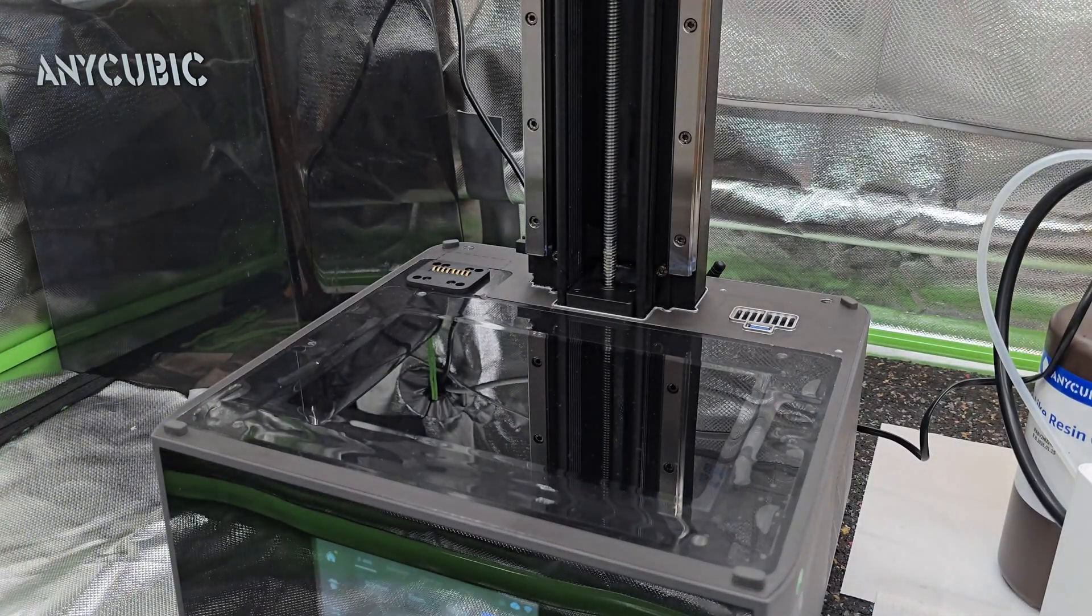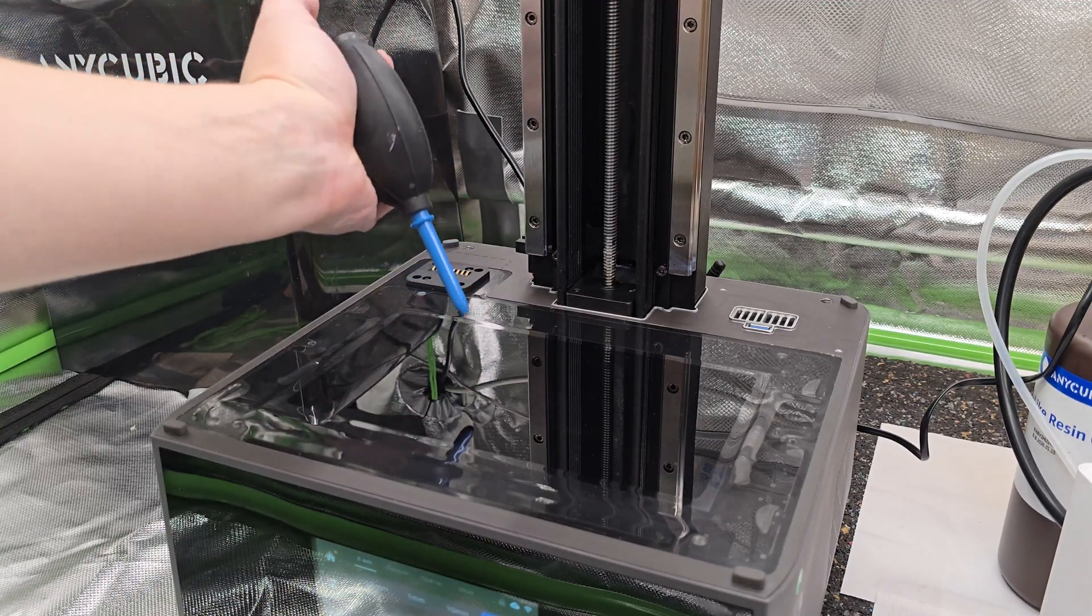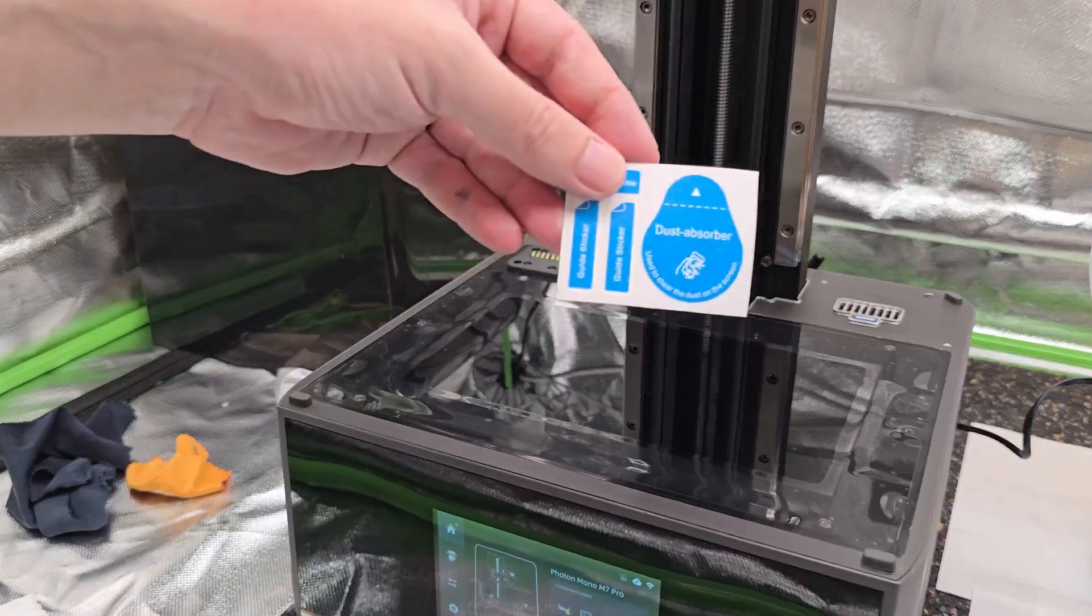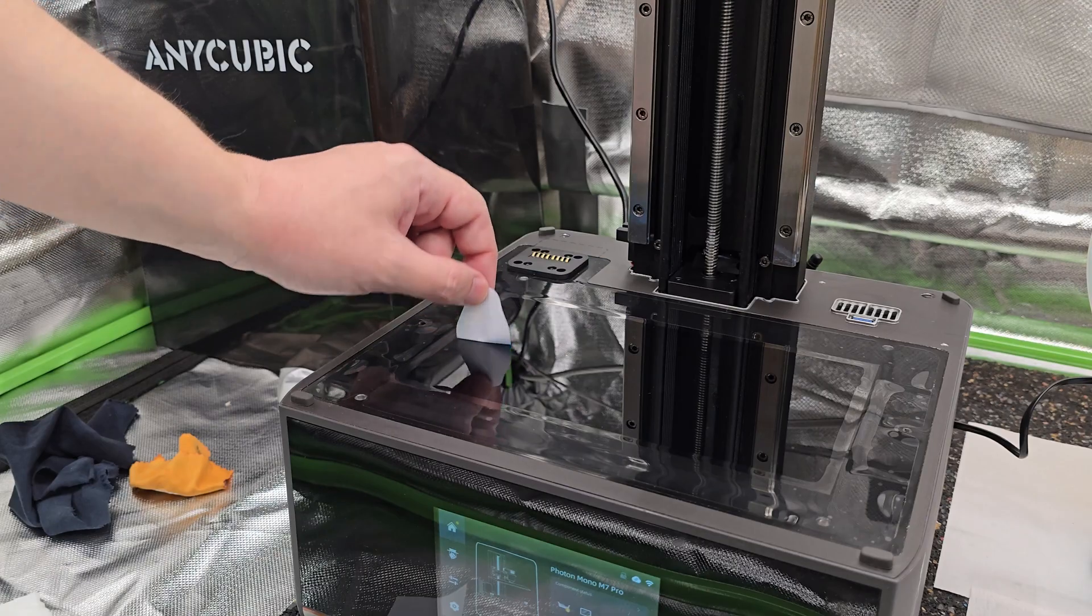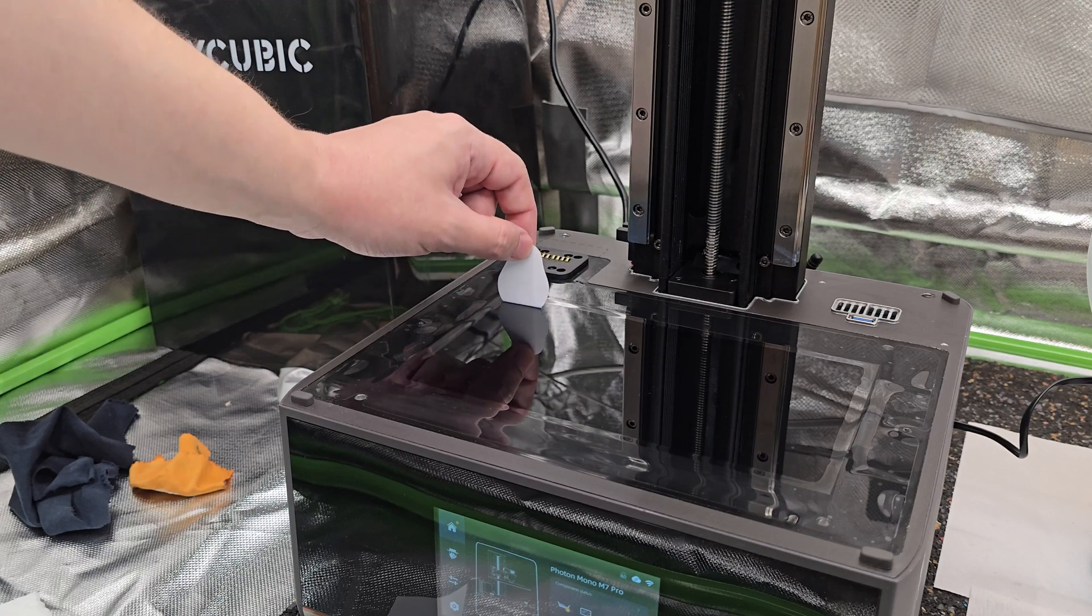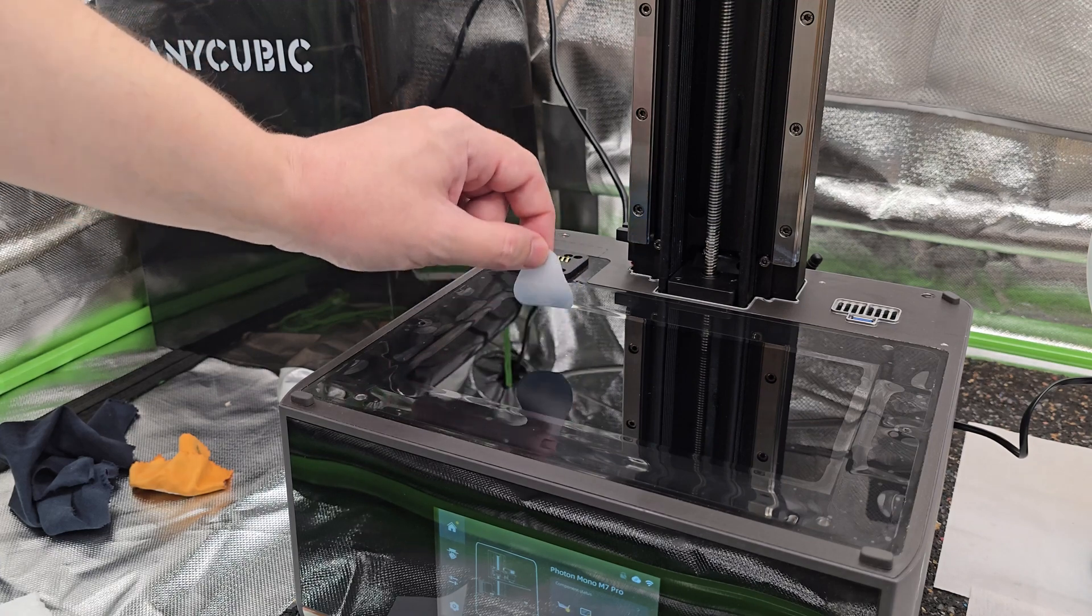Before you put the vat back on, use something to clean LCD screen. You can use hand blower to remove all the particles, but what I also like to use are those little dust removal stickers that you usually get when you buy screen protector for the mobile. You can grab hundreds of them for a few bucks on Temu or Amazon. They are perfect for picking tiny particles without scratching the screen.